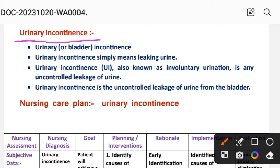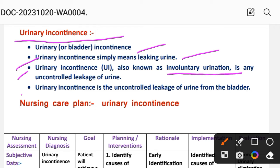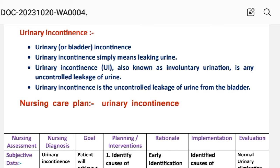First, let's see a short introduction about urinary incontinence. Urinary incontinence simply means leaking of urine. Urinary incontinence, also known as involuntary urinary incontinence, is any uncontrolled leakage of urine from the bladder.